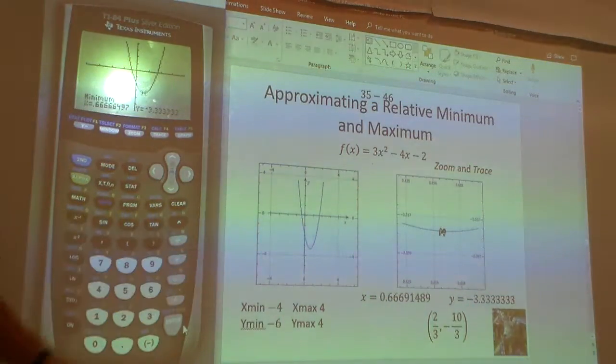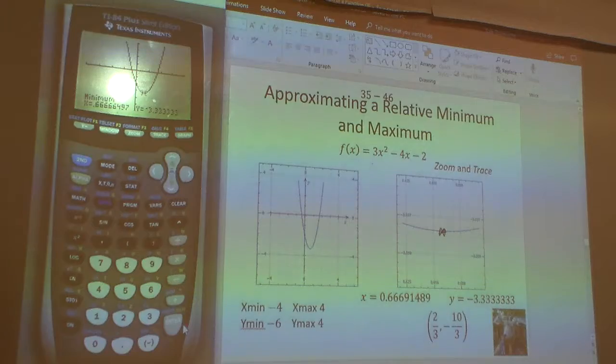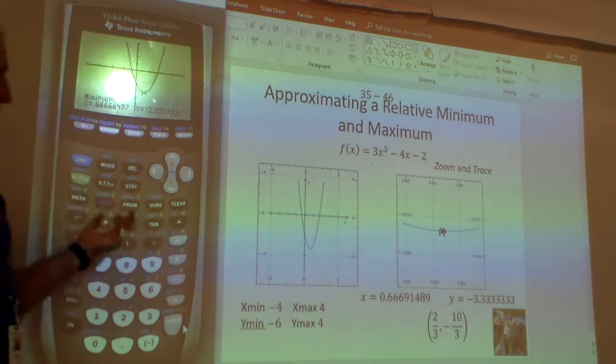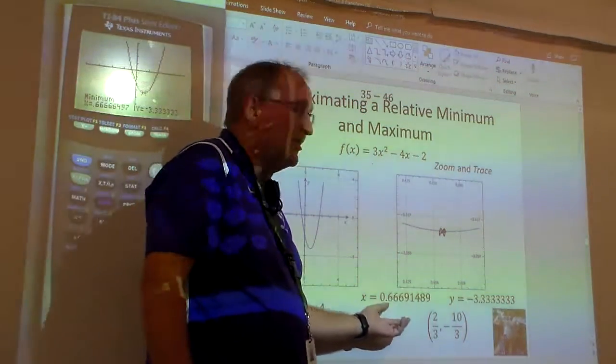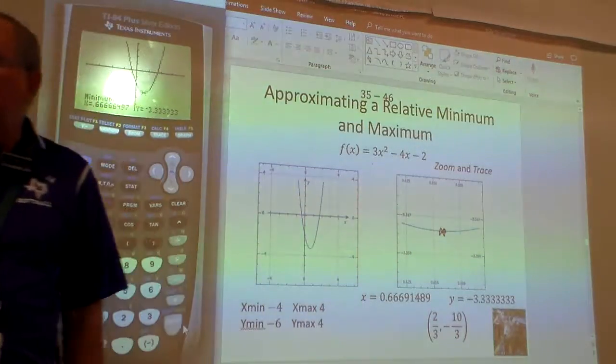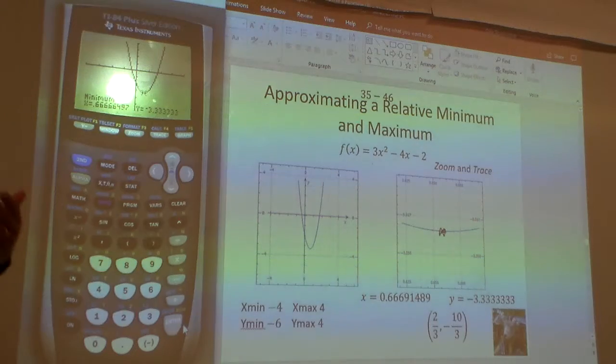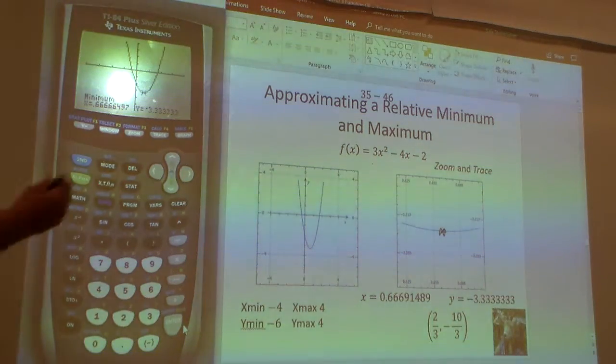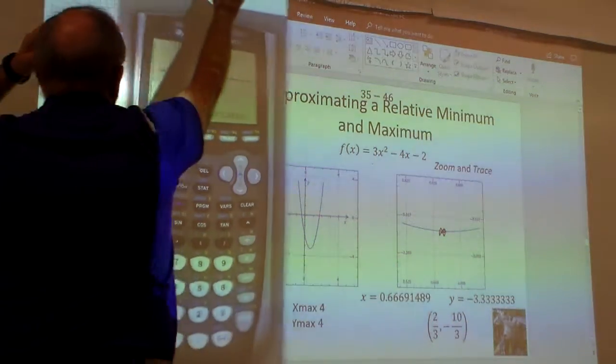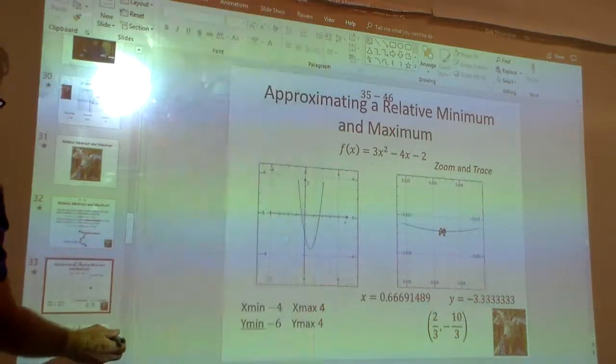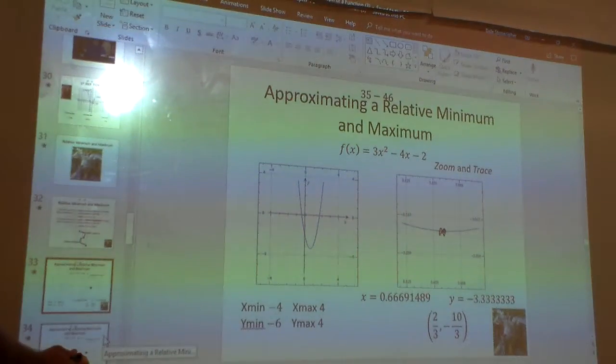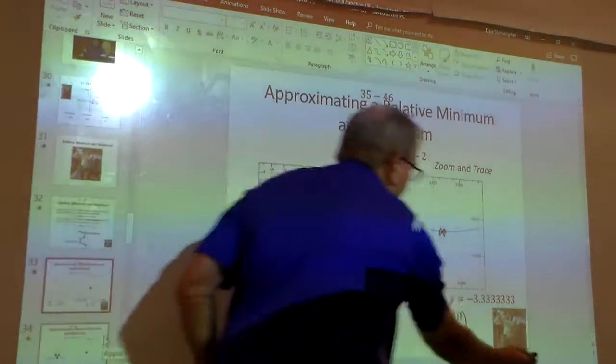Now, notice. If you get a bunch of point sixes, you can round these to fractions. Now, I'm not going to be too upset. If you just round like 0.67, I'm okay with that right now. But obviously, when you do this with a calculator, you're not going to get the exact answer with this. So, I kind of wanted to show that right here.